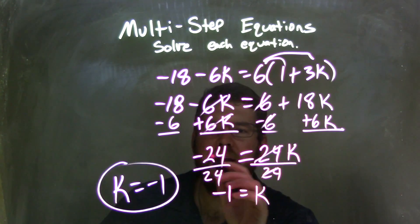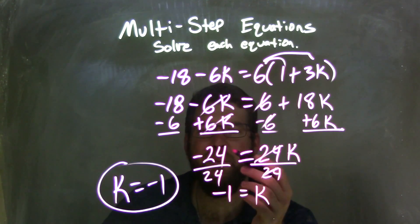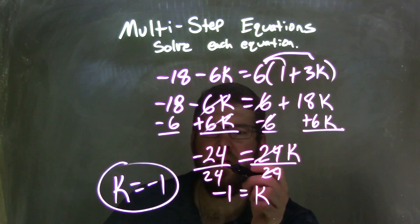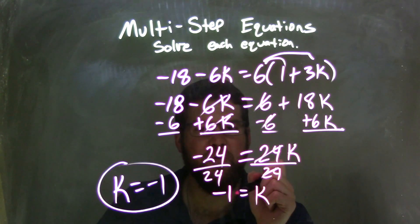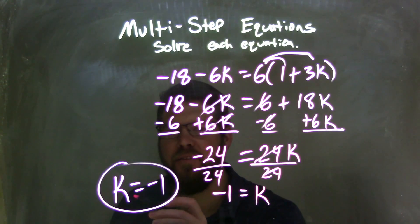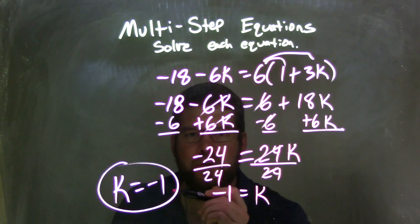Here on the right, negative 24 divided by 24. A number divided by itself is 1, and a negative divided by a positive is negative. Therefore, negative 24 divided by 24 is negative 1. I rearrange it to have k come first, because that's nice and neat. My final answer is k equals negative 1.